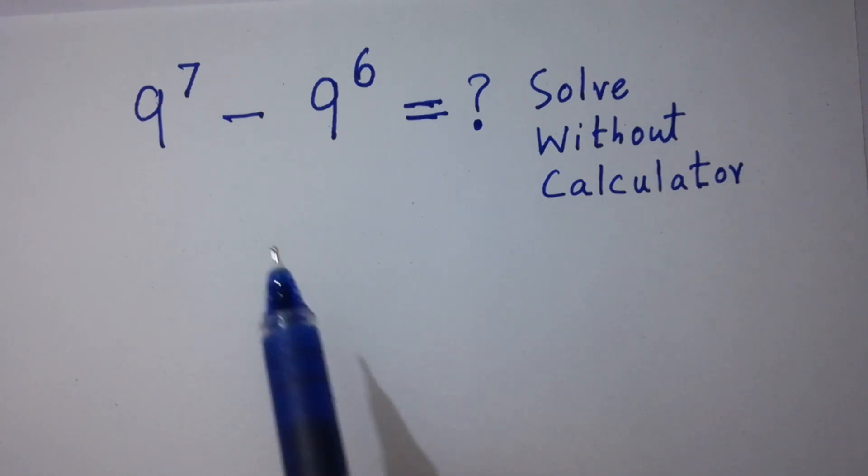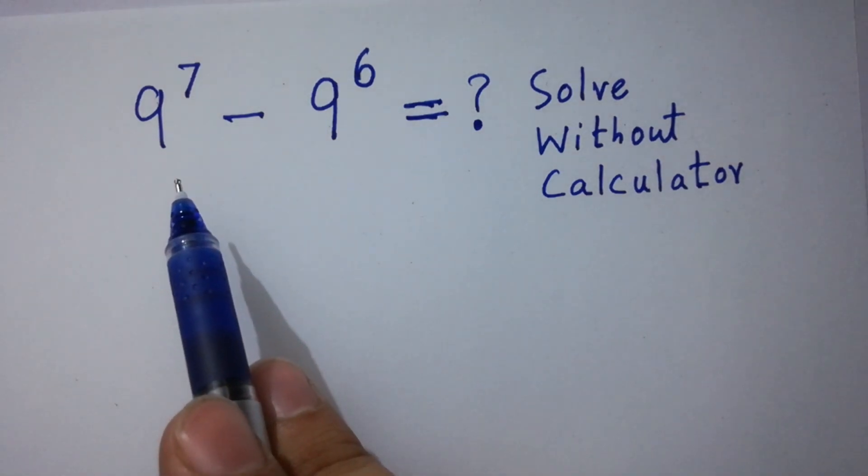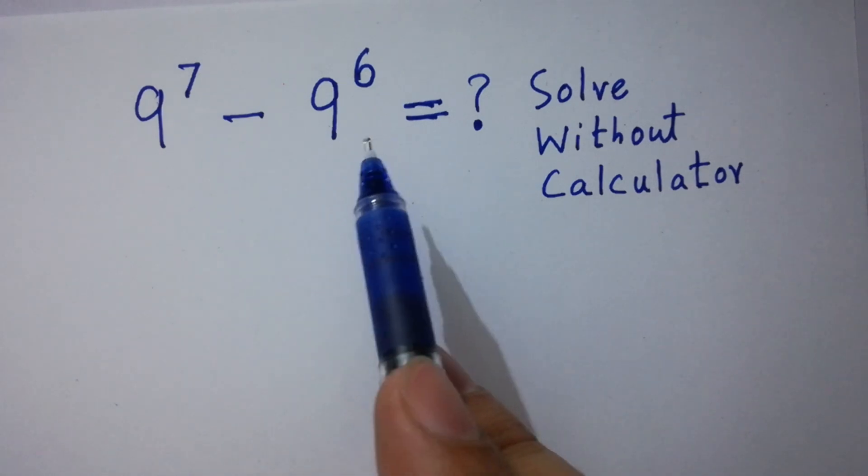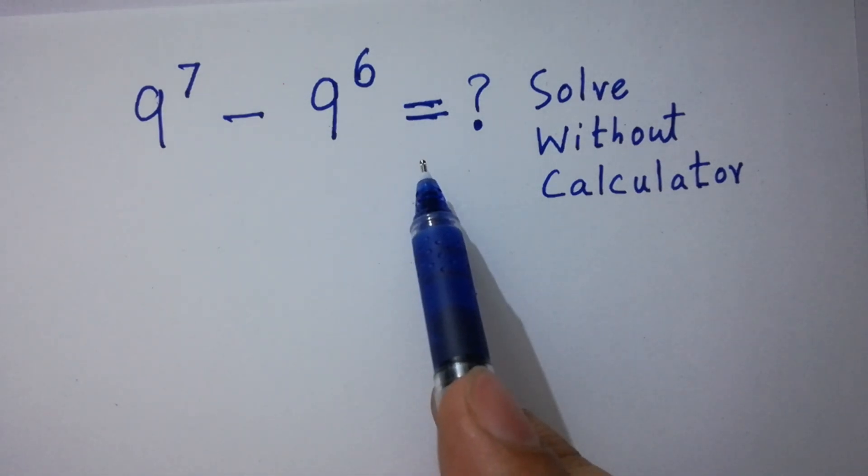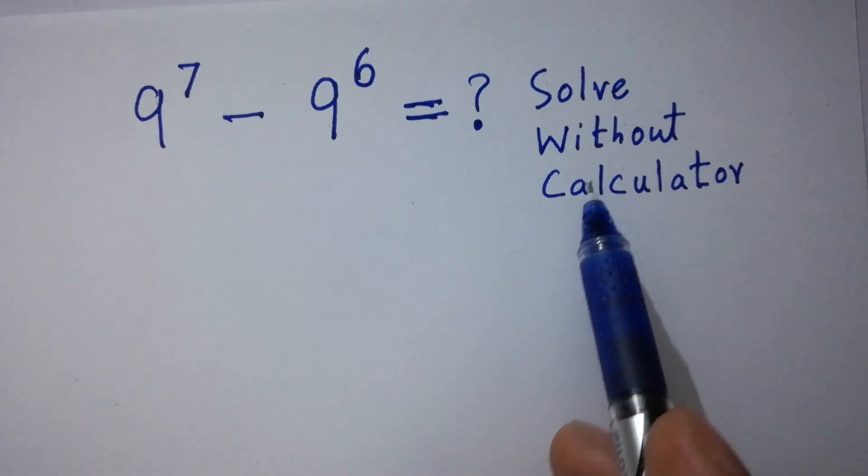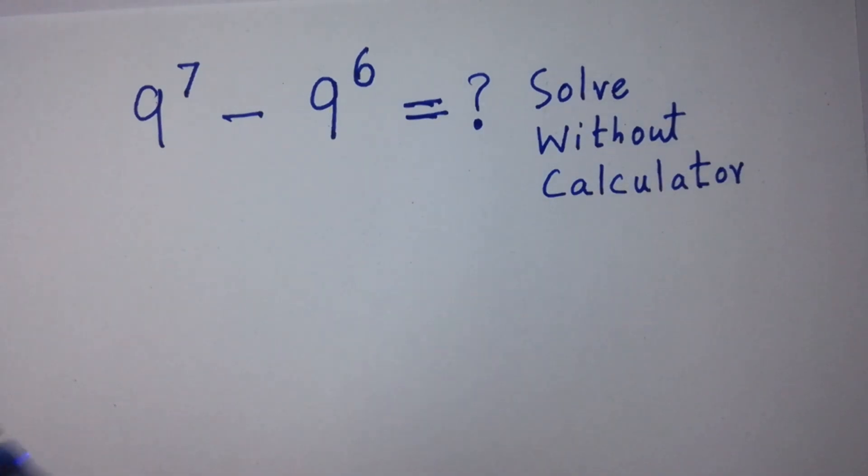Hello friends, 9 to the power 7 minus 9 to the power 6 equal to what? Solve without calculator. Let's have a solution.